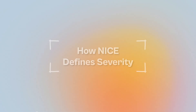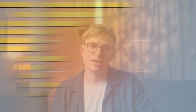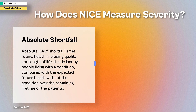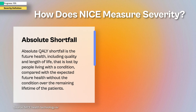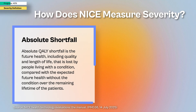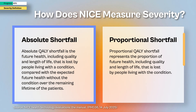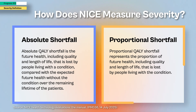NICE defines severity based on future health lost under current standard of care in the NHS, measured in two ways. First, absolute QALY shortfall: the total future health in QALYs that people with the condition will miss out on compared with people of the same age and sex in the general population. Second, proportional QALY shortfall: that same shortfall expressed as a percentage of what the general population would expect.